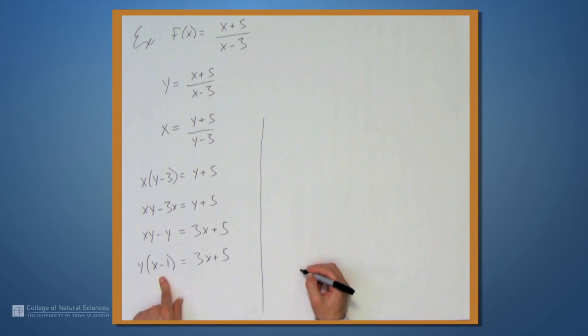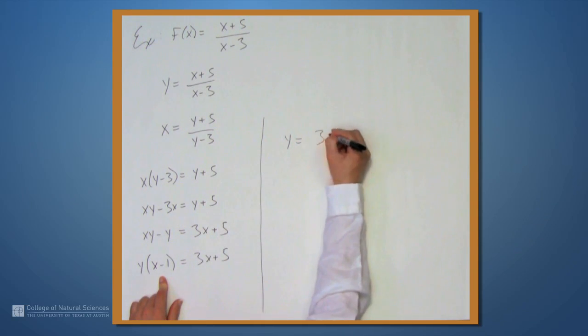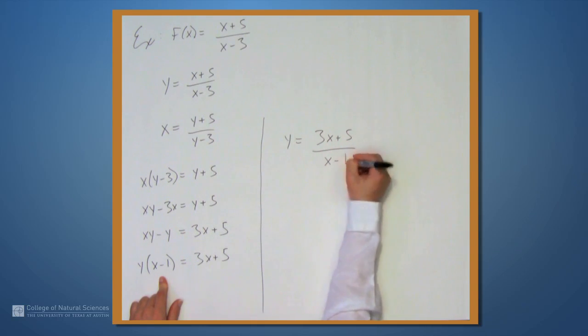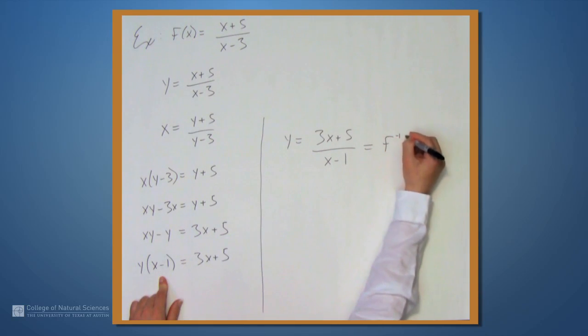And now, if we divide both sides by x minus 1, we get y equals (3x plus 5) over (x minus 1). And this is f inverse of x.